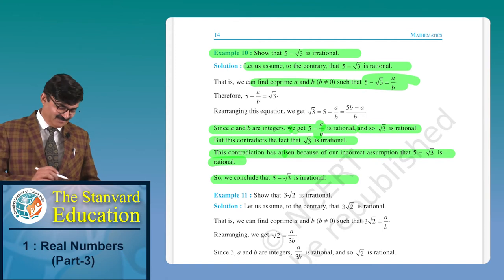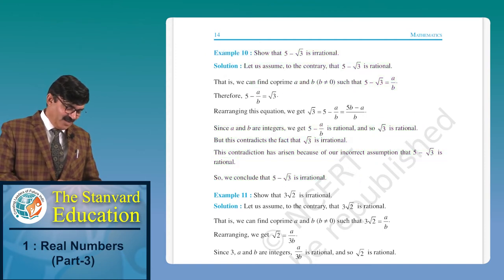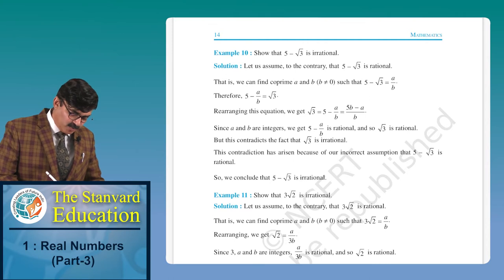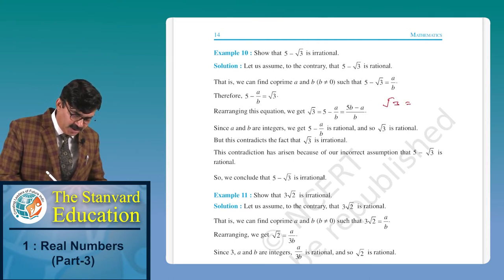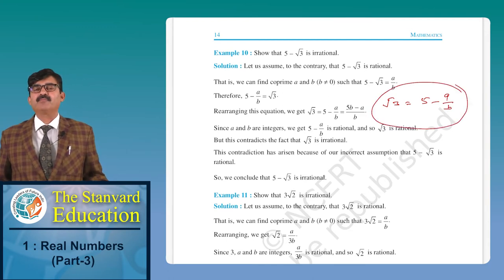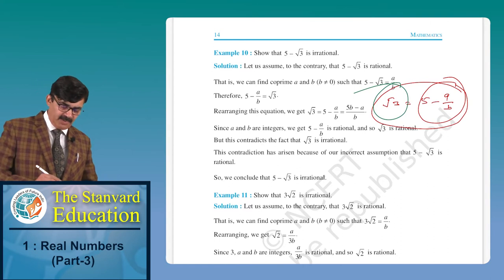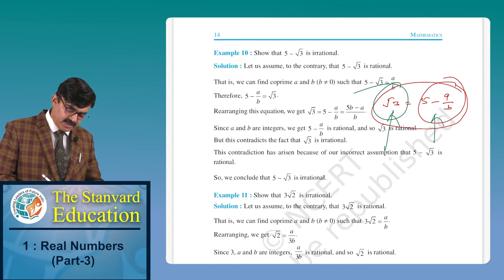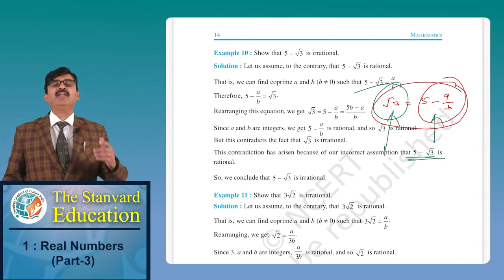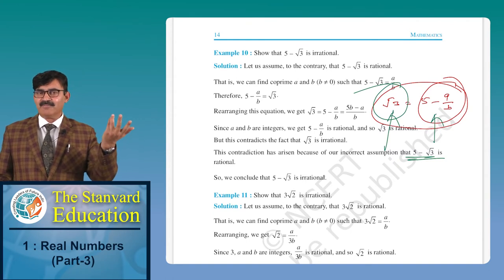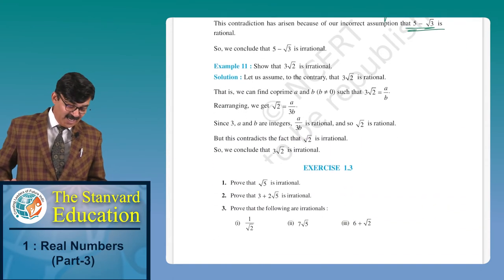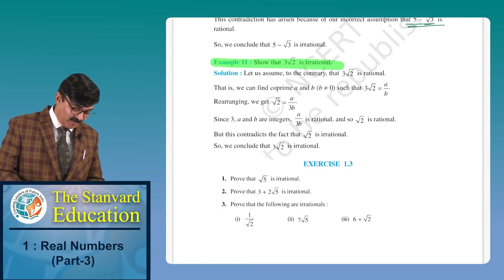Assume 5 minus root 3 is rational, write it as A/B. This means 5 minus A/B is a rational number. So root 3 equals 5 minus A/B, which is rational. But we know root 3 is irrational, so this is a contradiction. Our assumption was incorrect, therefore 5 minus root 3 is irrational.